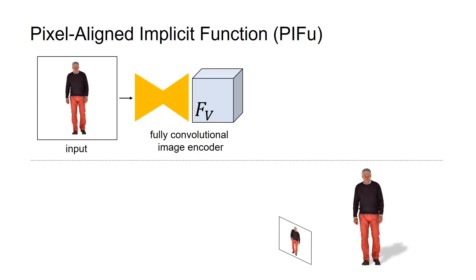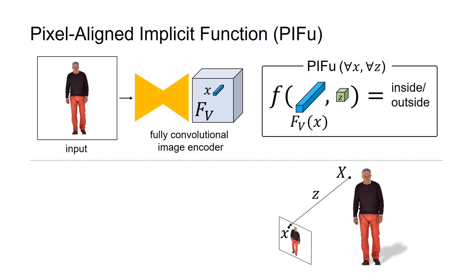Given an input, we apply a fully-convolutional image encoder to get spatial image features. For every 3D point, we sample the corresponding 2D point and z-coordinate in the image space. We then sample the image feature at that point and learn an implicit function f, which given the sampled image feature and the corresponding z-value predicts if that 3D point is inside or outside the surface. Repeating this procedure for all 3D points results in an implicit 3D occupancy field, from which we can recover the surface.